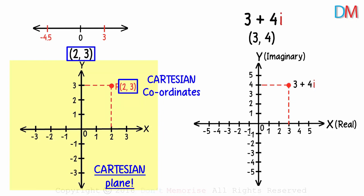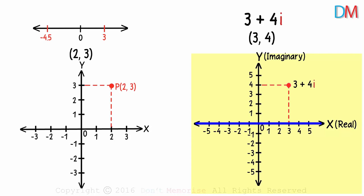And these coordinates were called the Cartesian coordinates. What is this plane called then? The plane in which the horizontal axis is the real axis and the vertical one is the imaginary axis. It's called the Argand plane or the complex plane.